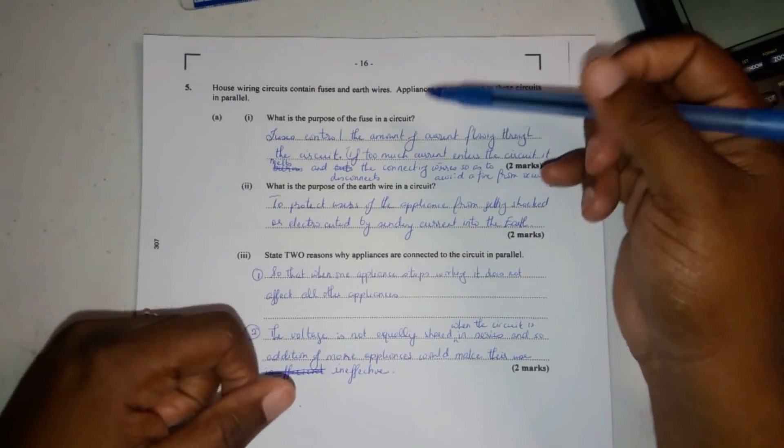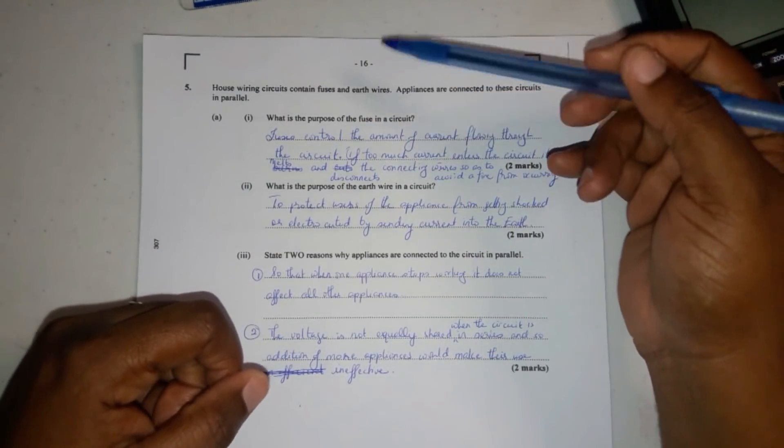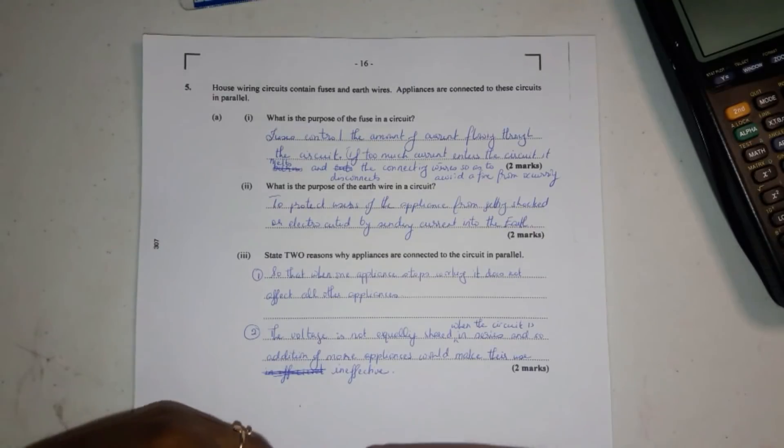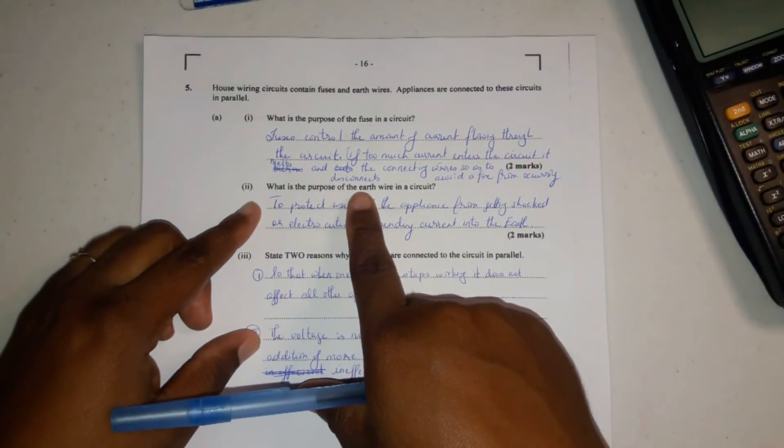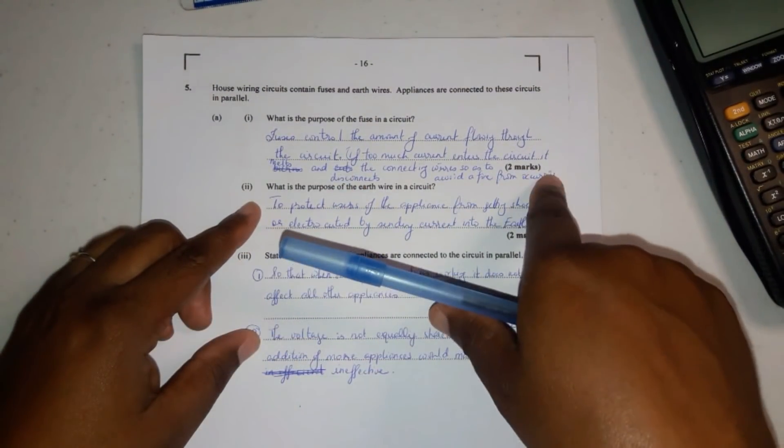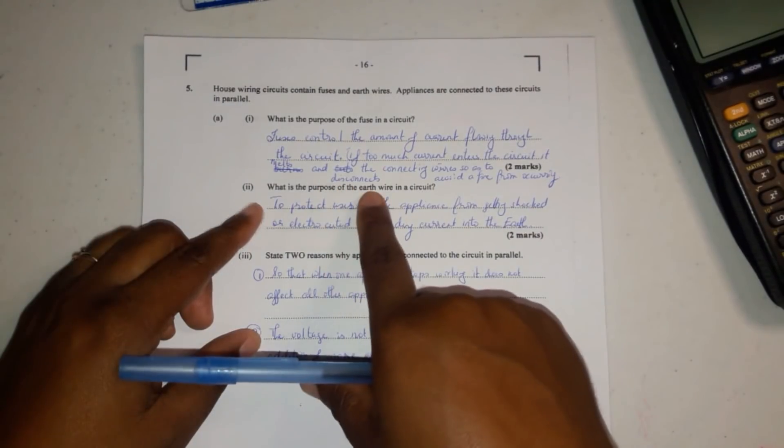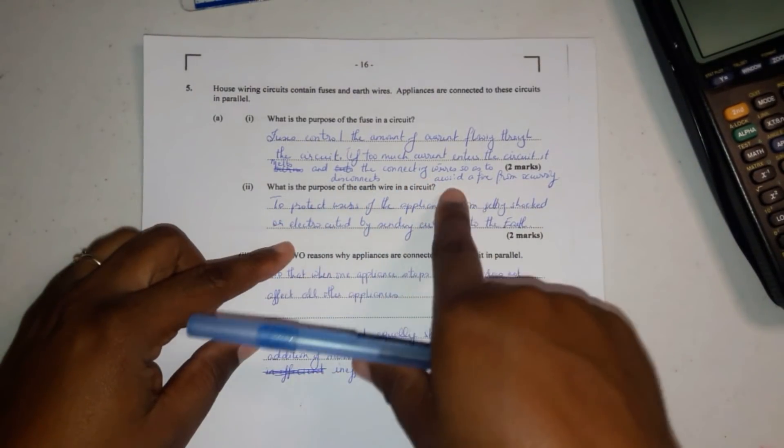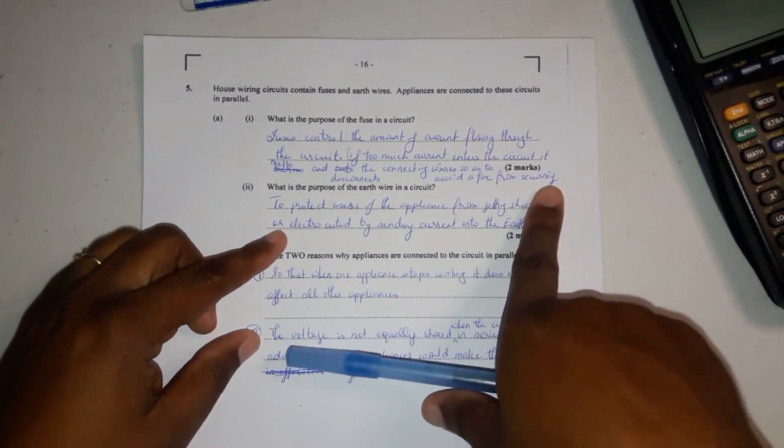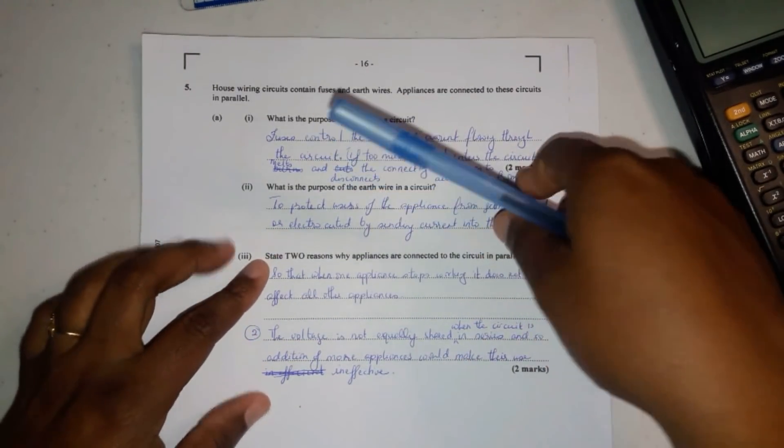Appliances are connected to these circuits in parallel. What is the purpose of the fuse in a circuit? Fuses are used to control the amount of current flowing through the circuit. If too much current enters the circuit, it melts and disconnects the connecting wires so as to avoid a fire from occurring. Alright, so that gives you 2 marks.